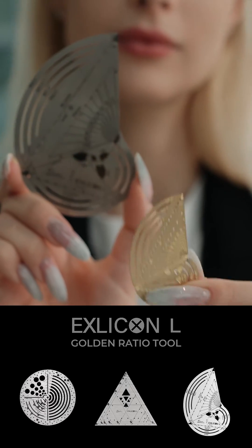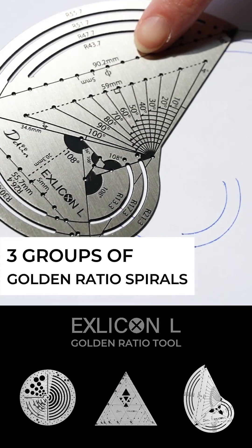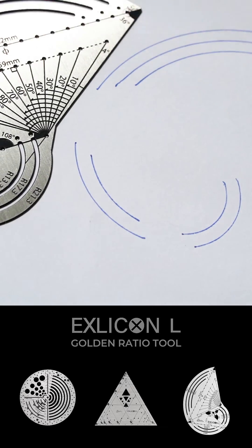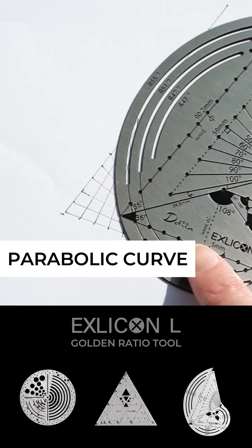The TG tool is an upgrade from our previous small disk. It is larger in size and designed with three groups of golden ratio spiral lines. Not only does it allow you to create golden triangles, but also to draw flawless parabolic lines.